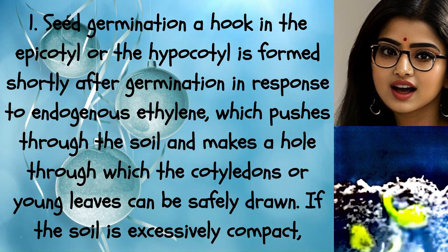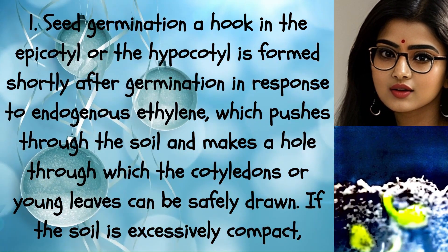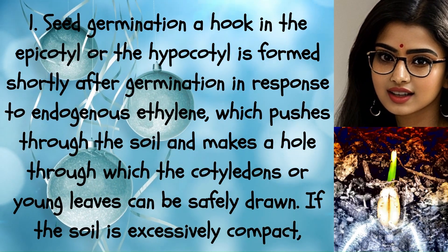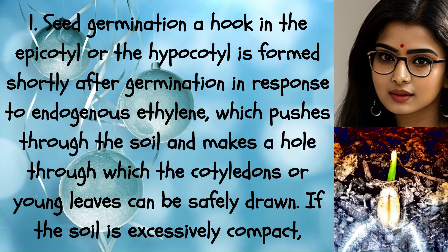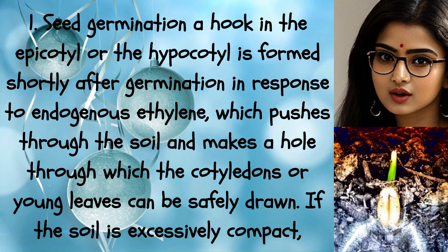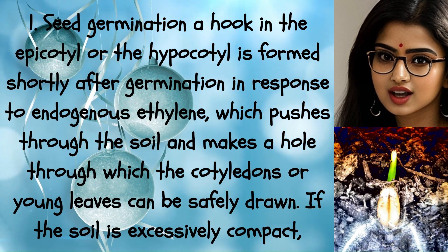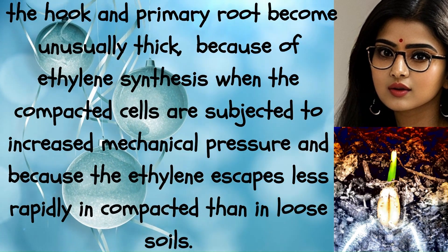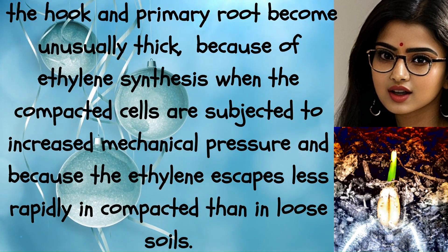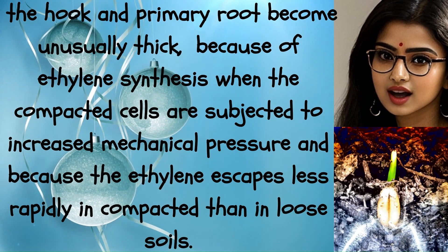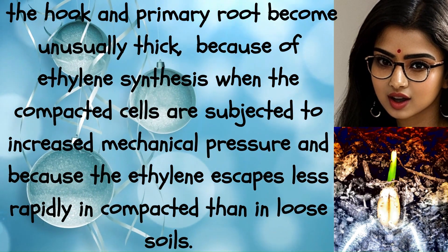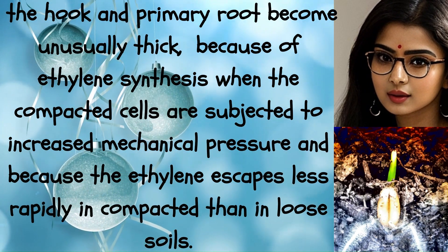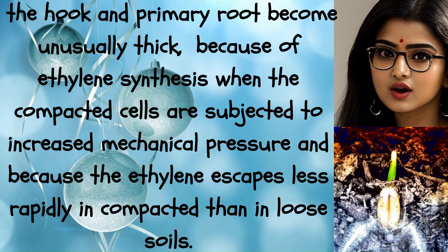Seed Germination: A hook in the epicotyl or the hypocotyl is formed shortly after germination in response to endogenous ethylene, which pushes through the soil and makes a hole through which the cotyledons or young leaves can be safely drawn. If the soil is excessively compact, the hook and primary root become unusually thick because of ethylene synthesis when compacted cells are subjected to increased mechanical pressure, and because ethylene escapes less rapidly in compacted than in loose soils.